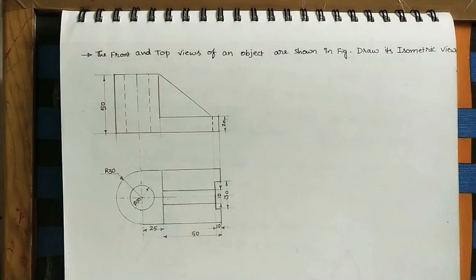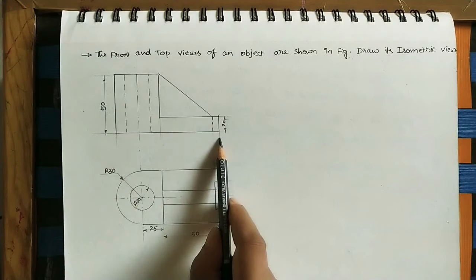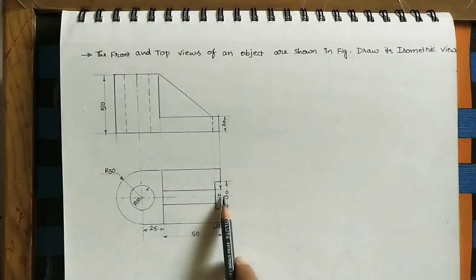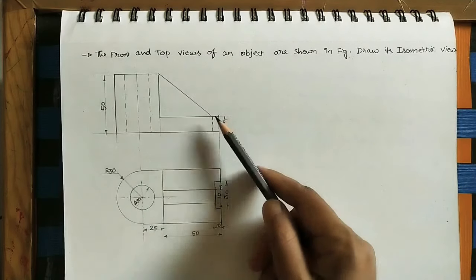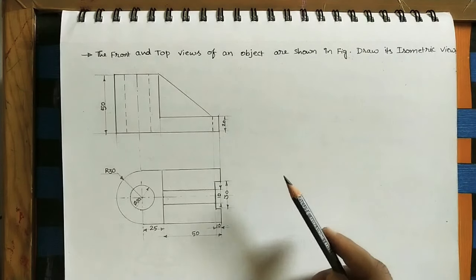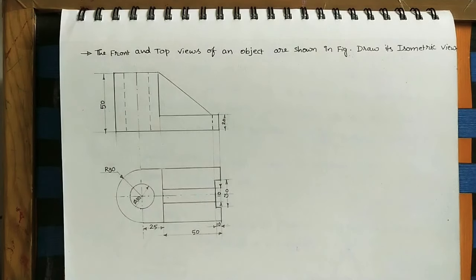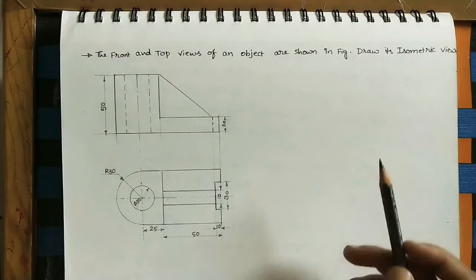Some dimensions are given here, and the remaining dimensions we have to take from the top view. They have distributed some dimensions — some here, some here. For example, if we want a certain width, we take the total width from the diagram. Units are not mentioned; if units are not mentioned, consider all units are in mm (millimeters). For example, 50 mm is 5 centimeters. Let us do the isometric view using these two diagrams.